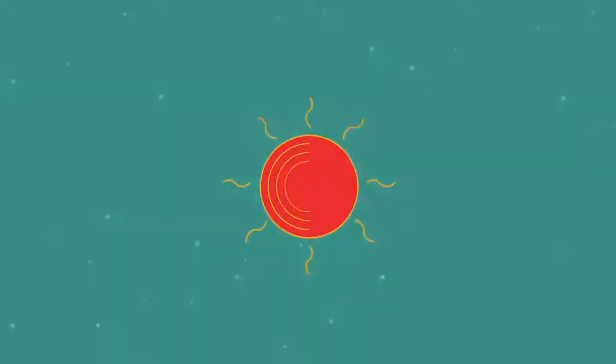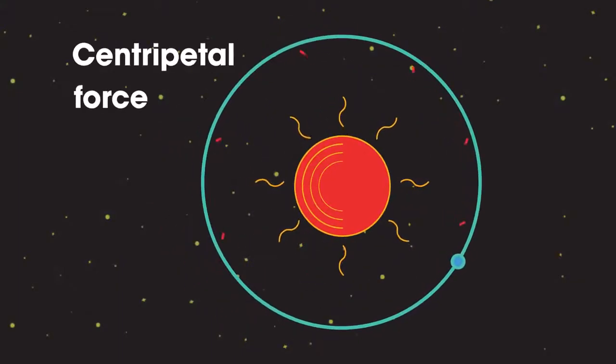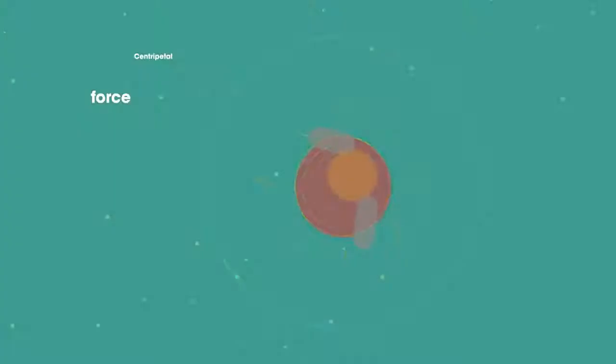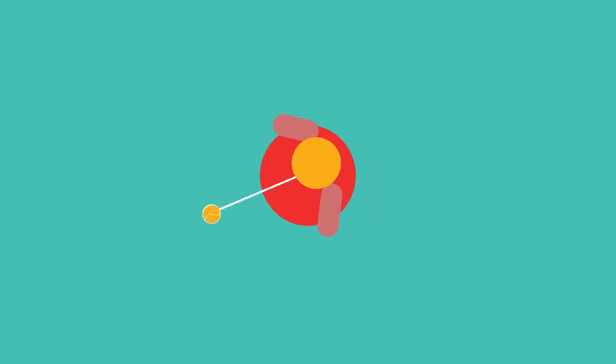Gravitational attraction provides the centripetal force needed to keep planets and all types of satellite in orbit. Try swinging a ball attached to a string around your head. The string pulls the ball into the circular orbit.